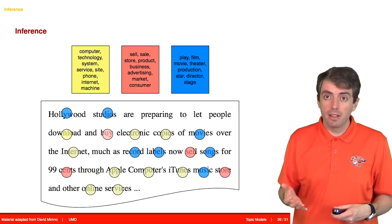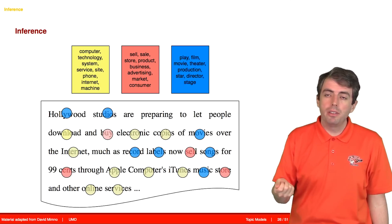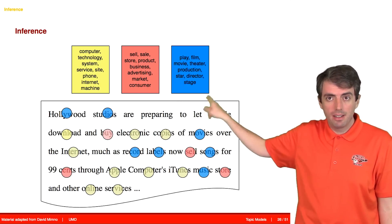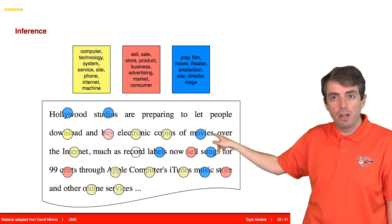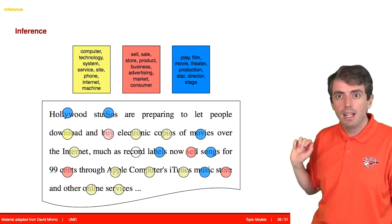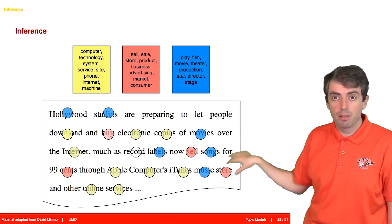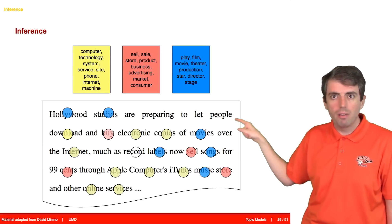So the way this works is we're going to do this on a word-by-word basis. What we're going to do is change the topic assignment of a single word. We're going to pretend that we don't know the topic assignment of a single word, but we know all of the other assignments of all of the other words. And that gives us a complete description of our dataset, except for this one word.